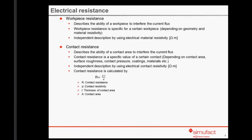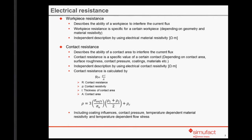How are these influences implemented in the program and how can we get the data? You can use directly measured data dependent on temperature, or you can use the Bay-Wanheim equation, which we implemented as a default value into SimuFact Welding and which covers all the mentioned influences.